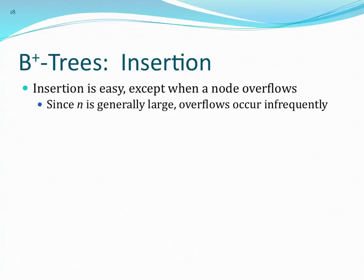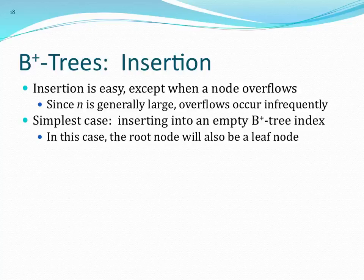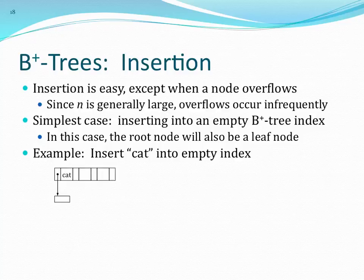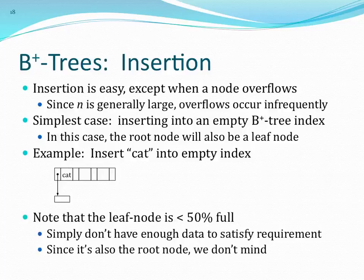Insertion: 99% of the time, with a high branching factor, you don't have to think about splitting. When you insert into an empty B-tree index, the root is also a leaf. If your index is empty or has only a handful of values, the root node will be a leaf, so you're already looking for the value you want. To insert 'cat' into an empty index: that's our root node. The root frequently will not be 50% full — this is the one exception — because the index may not be large enough to populate it to that size.